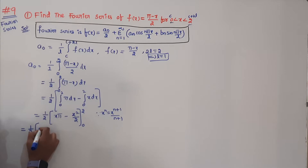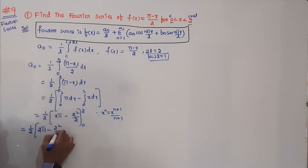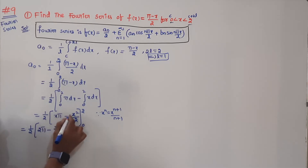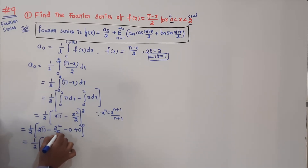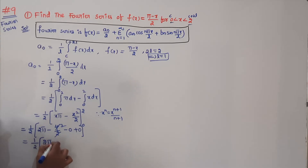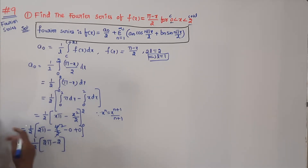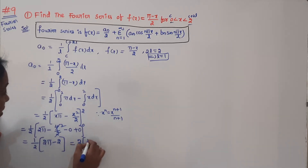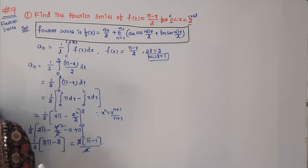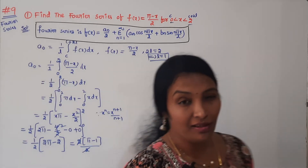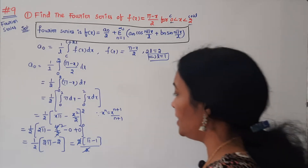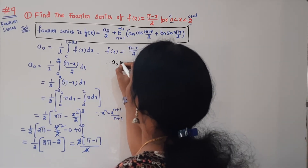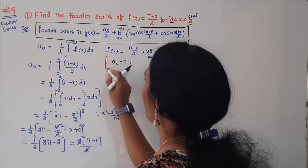Substituting the upper limit x = 2: 2π - 2²/2 = 2π - 2. Substituting the lower limit x = 0: 0. So A0 = (1/2) × (2π - 2). Taking 2 as common in the numerator gives π - 1, and the 2 cancels. Therefore, A0 = π - 1.